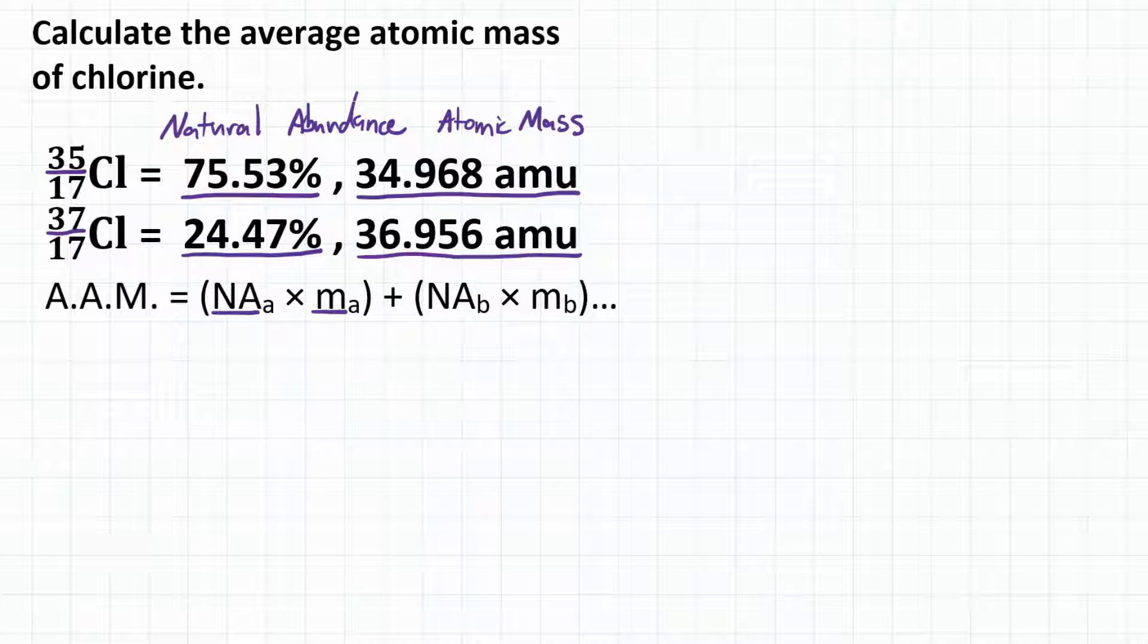So let's plug in our values into our equation. Looking at chlorine-35 first, we're going to multiply the natural abundance, and we're going to express that as a decimal.